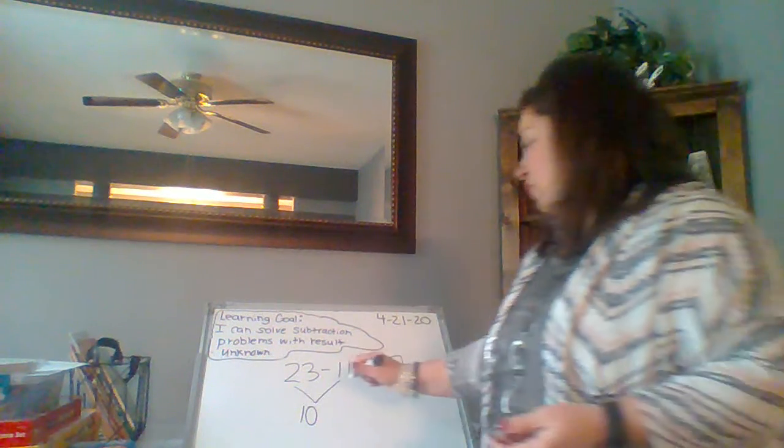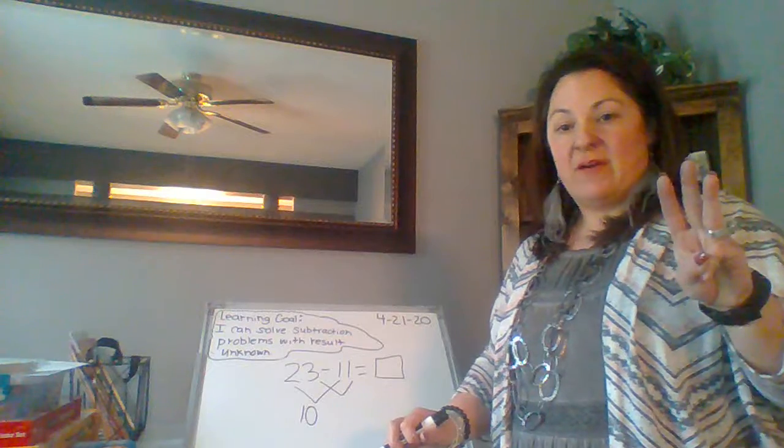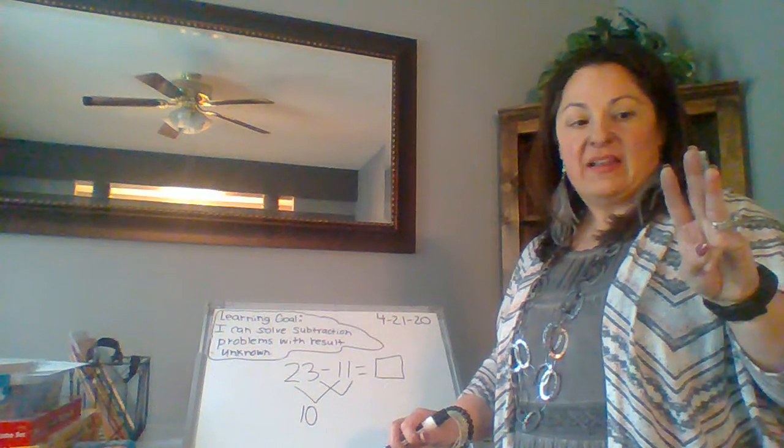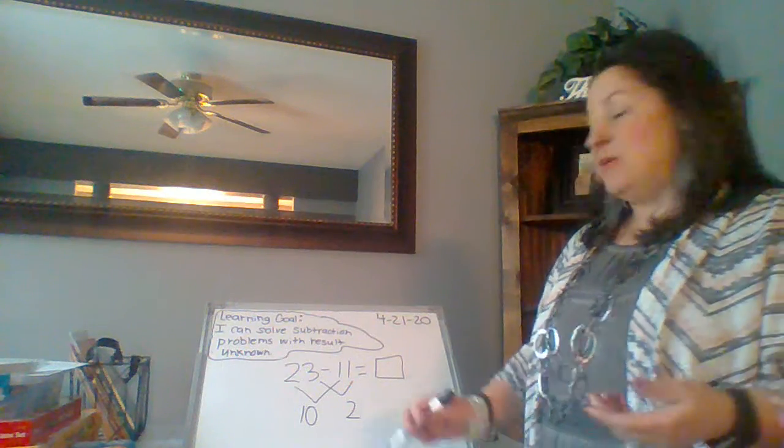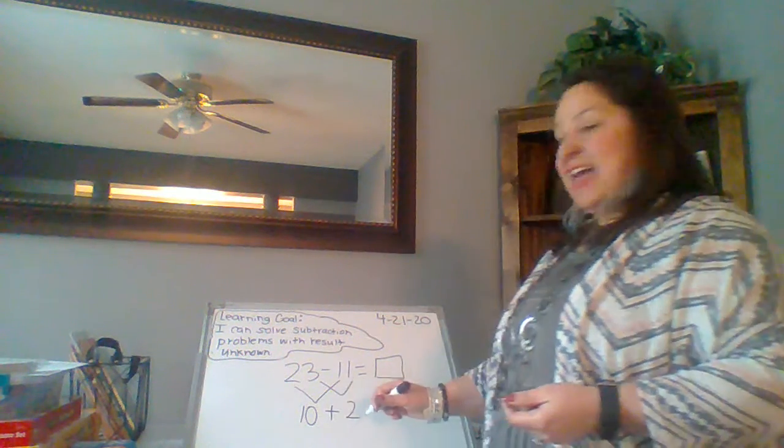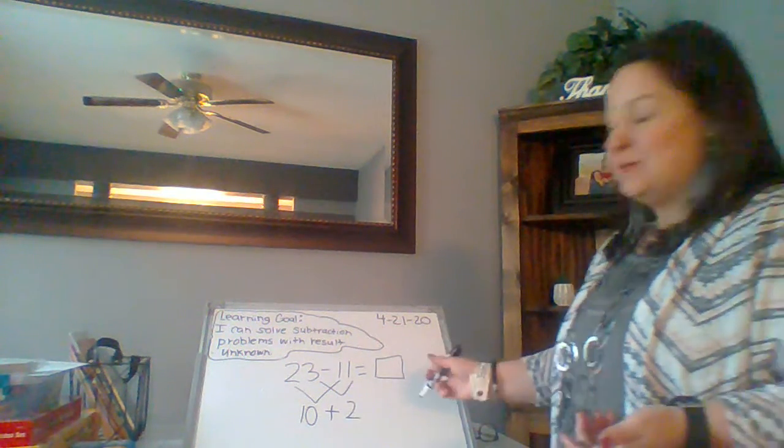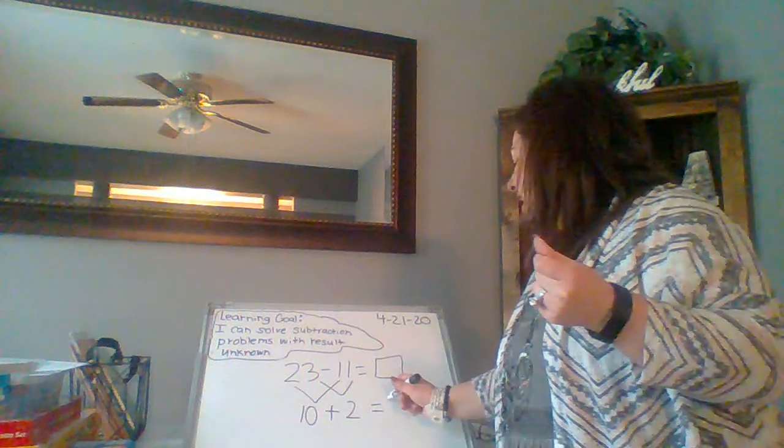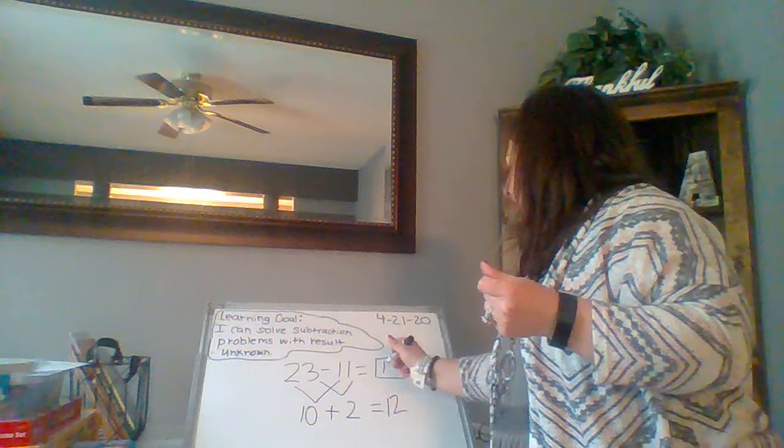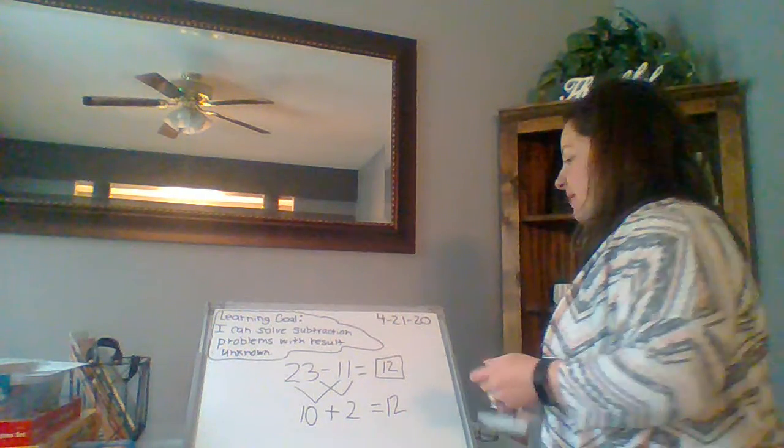Let's do the same thing for the 1s. So if I have three 1s and I take away one 1, that leaves me with two 1s. Now I need to put those 10s and those 1s back together to get my final answer. So what is 10 plus 2? Quickly. 12. Good job. You got it. All right. So do you see how to do that? All right.